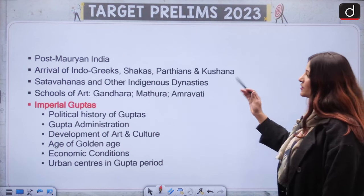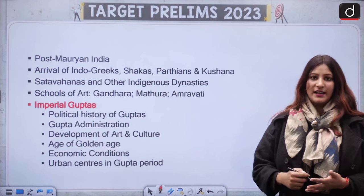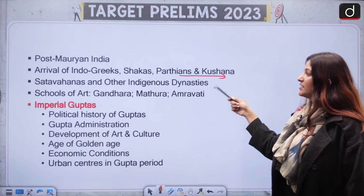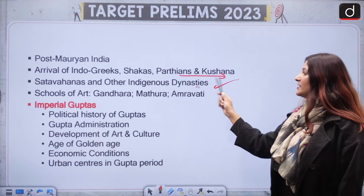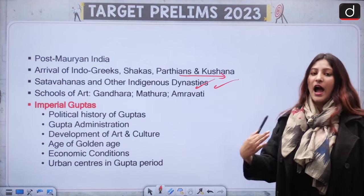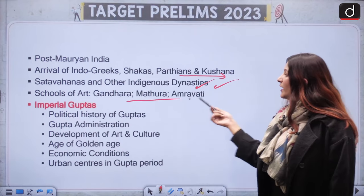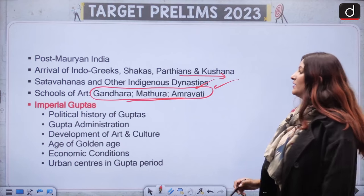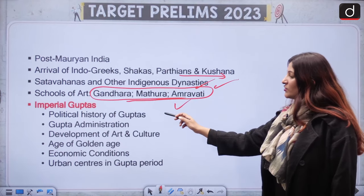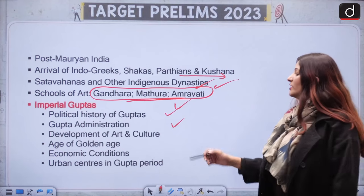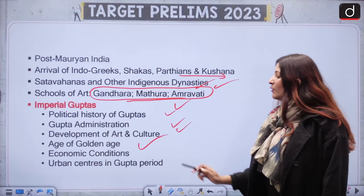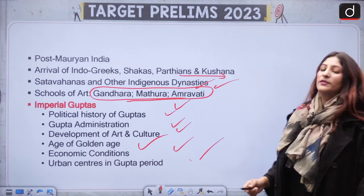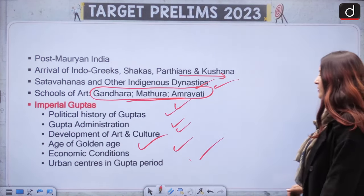In Post-Maurya India: when did the Indo-Greeks arrive and their important rulers? Shakas, Parthians, and Kushanas, Satvahanas and other indigenous dynasties are also important. School of Art is very important — do remember to read about it. Then we have Imperial Guptas: political history, administration, development of art and culture, why it is known as the Golden Age, economic conditions, and urban centres of the Gupta period.